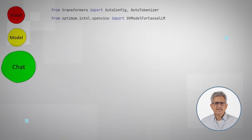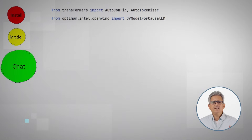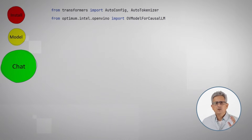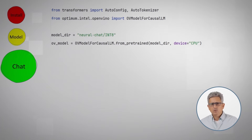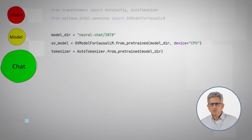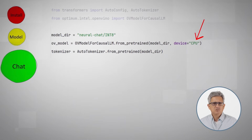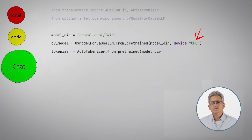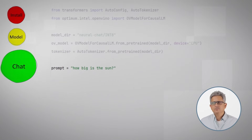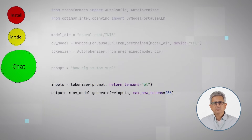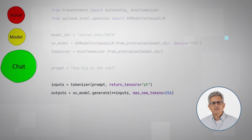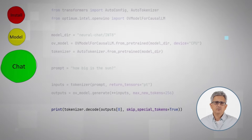Let's run a small application for a chatbot. We need the auto tokenizer from the transformers library and Optimum OpenVINO. The model can be found in the model directory. Here I choose to run it on my CPU — just change the device to GPU to run it on your GPU. Here is a simple prompt: tokenize the prompt, use it as an input, get the output, and print the results.